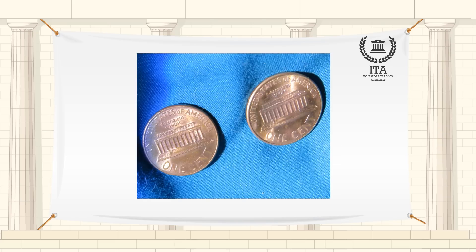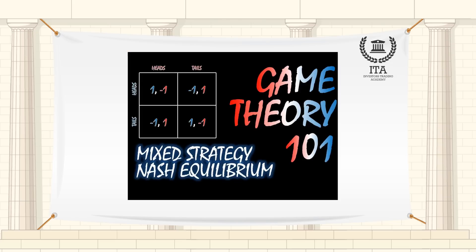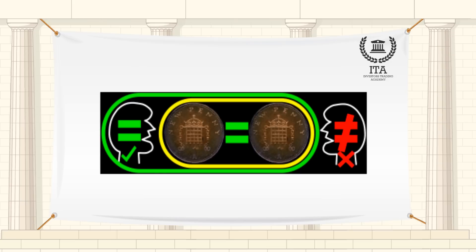If both pennies are heads or tails, player A wins and keeps player B's penny. If they don't match, player B wins and keeps player A's penny. This is a zero-sum game because one player's gain is the other's loss.